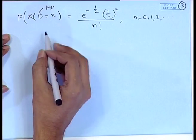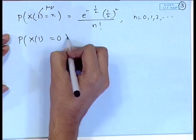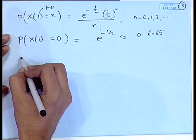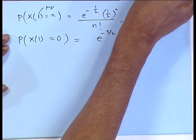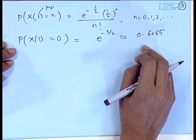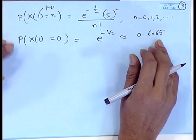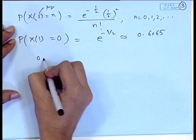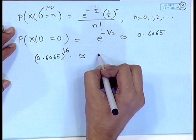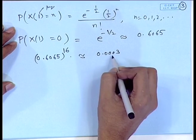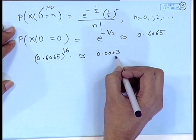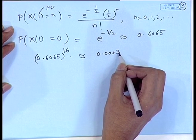The probability that a page has no errors is P(X₁=0) = e^(-1/2) ≈ 0.6065. For a 16-page chapter with no errors, each page containing an error or not can be considered a Bernoulli trial, so this is 0.6065^16 ≈ 0.0003. This is quite small, which is obvious since even on one page the probability of no error is only 0.60.